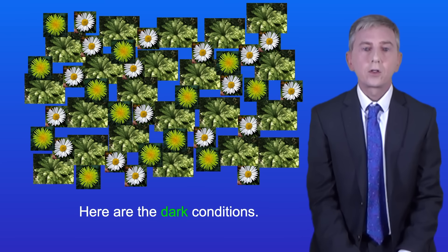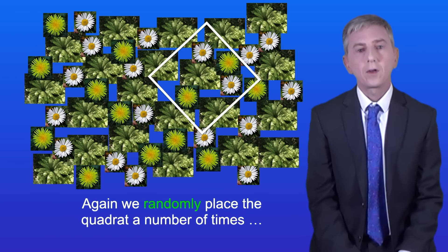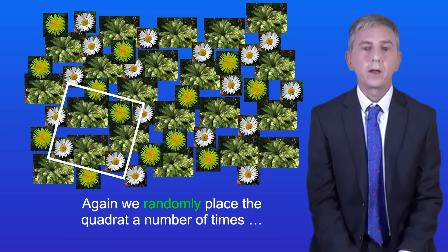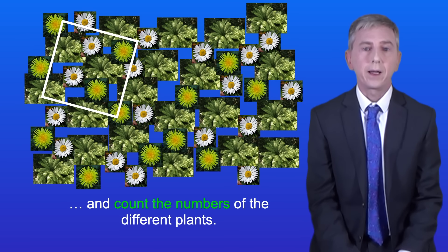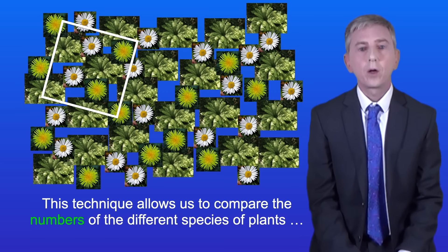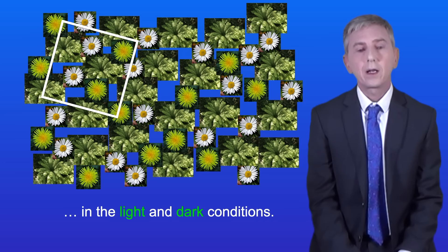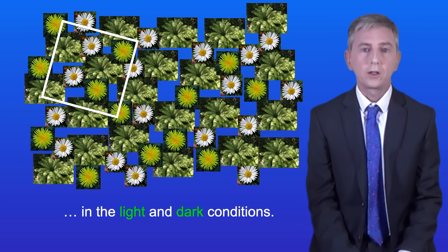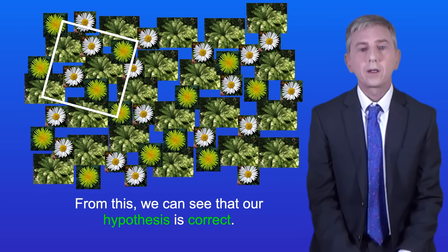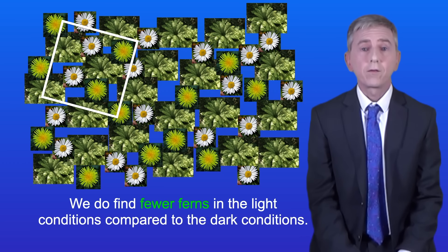Now here are the dark conditions, and again we randomly place the quadrat a number of times and count the numbers of the different plants. This technique allows us to compare the numbers of the different species of plants in the light and dark conditions. From this we consider our hypothesis is correct — we do find fewer ferns in the light conditions compared to the dark conditions.